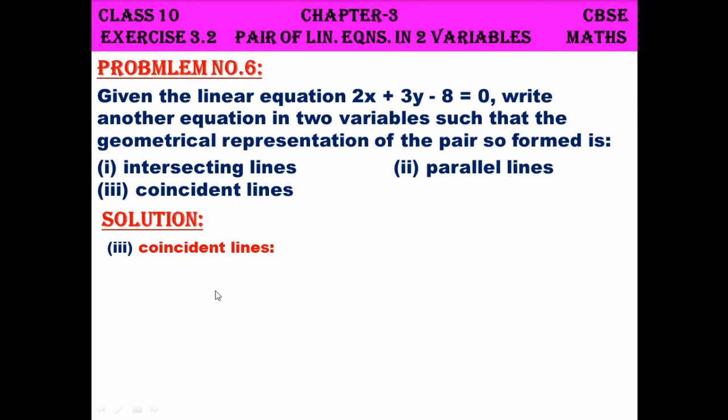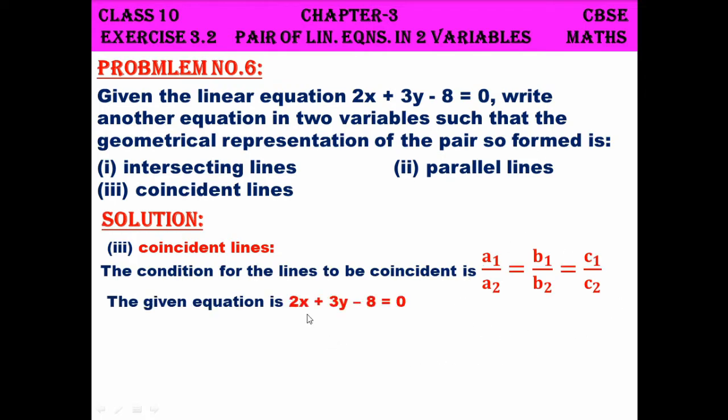The third subdivision is to write an example for coincident lines. The condition for coincident lines is that all three ratios should be equal. And the given equation is 2x plus 3y minus 8 equals 0. Now all the ratios should be equal. So what I'm going to do is multiply this equation throughout by a common number so that all the ratios become equal. So let me multiply by that same 3.